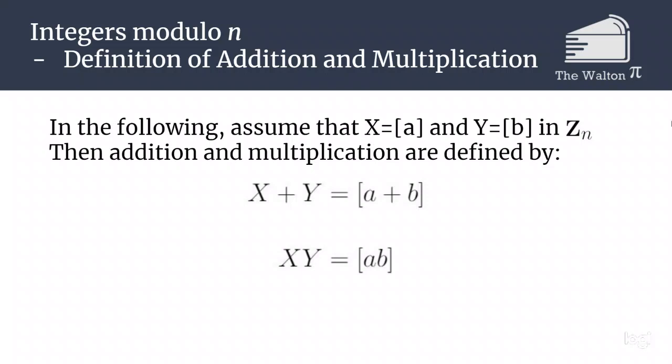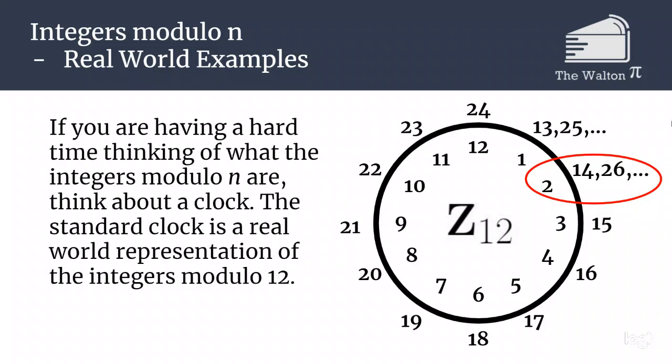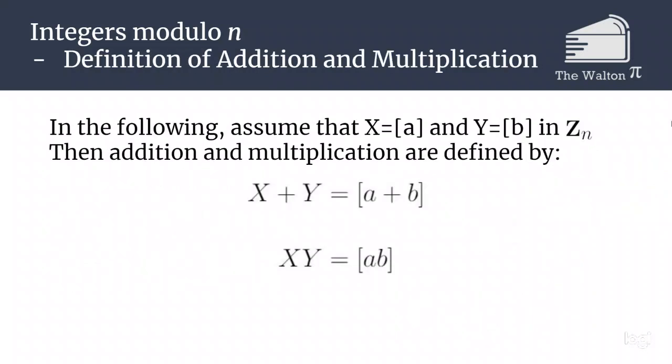Now, because equivalence classes have multiple elements, we have to figure out, is this definition valid, no matter which values I pick, and am I going to get the same answer every time. And that's what's referred to as being well defined.